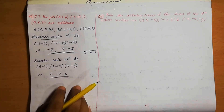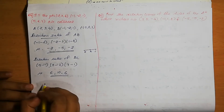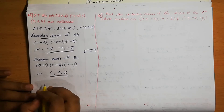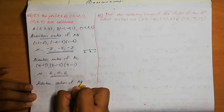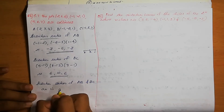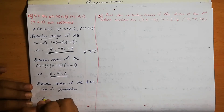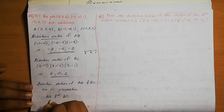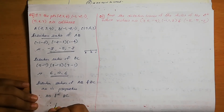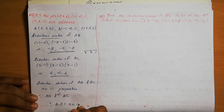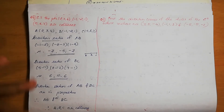So these two direction ratios are in proportion. It can be seen that the direction ratios of AB and BC are in proportion, so AB is parallel to BC. Since the point B is common to both AB and BC, therefore A, B, C are collinear.